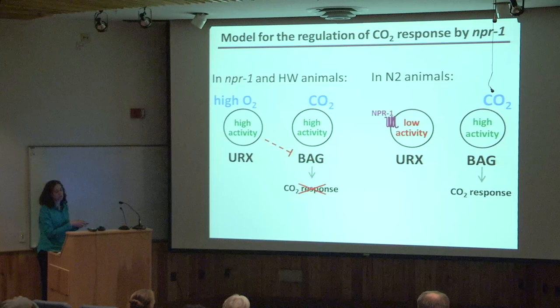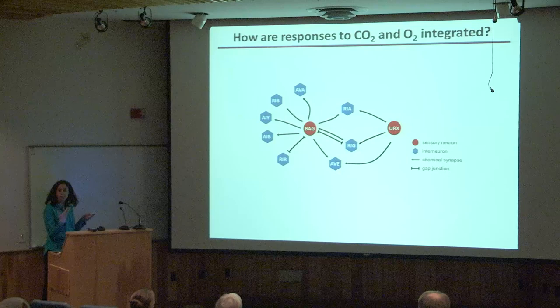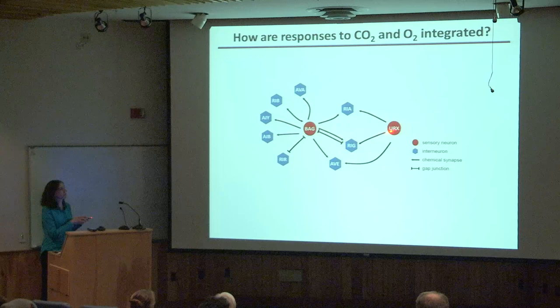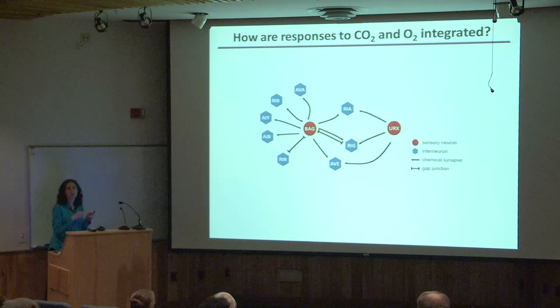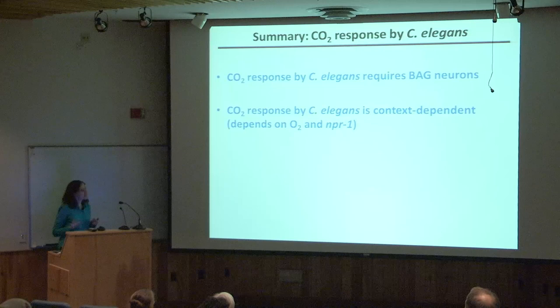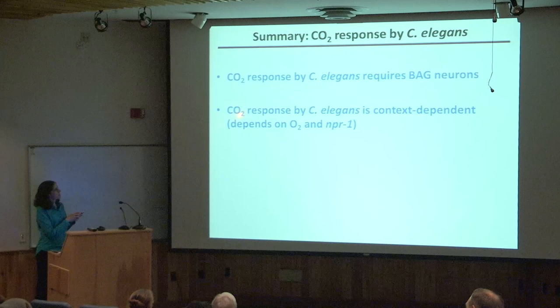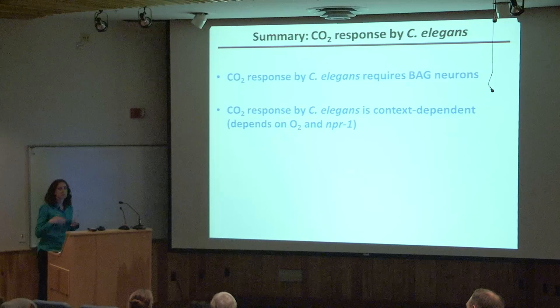In summary for C. elegans CO2 response: we showed that BAG sensory neurons are required for CO2 detection, that CO2 response is context-dependent — modulated by ambient oxygen levels and NPR-1 — and that three interneurons downstream of both BAG and URX neurons are good candidates for integration of CO2 and oxygen information. In NPR-1 and Hawaii animals at low oxygen, URX neurons are inactive and the animals respond to CO2; at high oxygen, URX neurons are active and block CO2 response. In N2 animals, NPR-1 keeps URX in a low-activity state regardless of oxygen, allowing consistent CO2 avoidance.